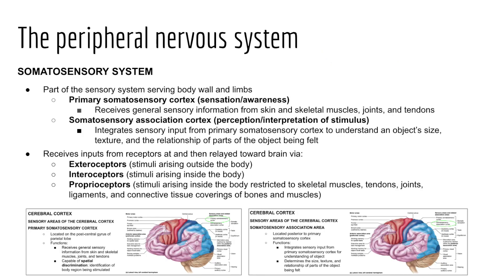Next, I want to look at the somatosensory system — somato meaning body, sensory relating to physical sense. The somatosensory system is part of the sensory system serving the body wall and limbs, processing information about several modalities. A modality is what is perceived after a given stimulus — smell, touch, sight, hearing, taste. This system informs us about objects in our external environment through touch and proprioception, relaying body position and movement information to the CNS.